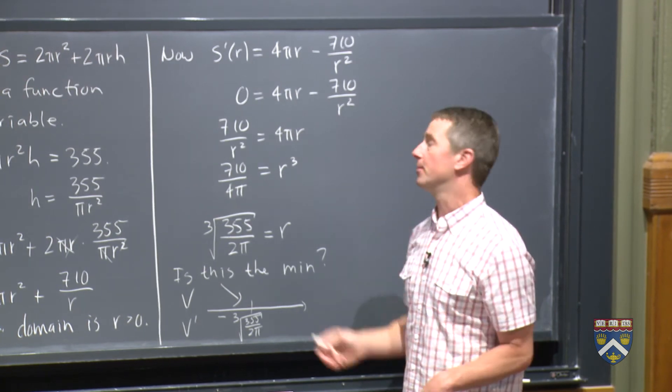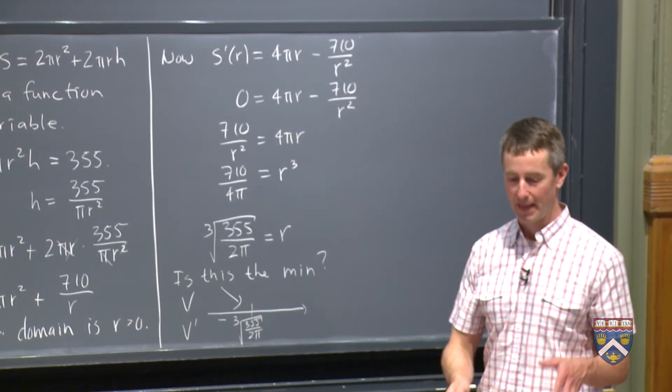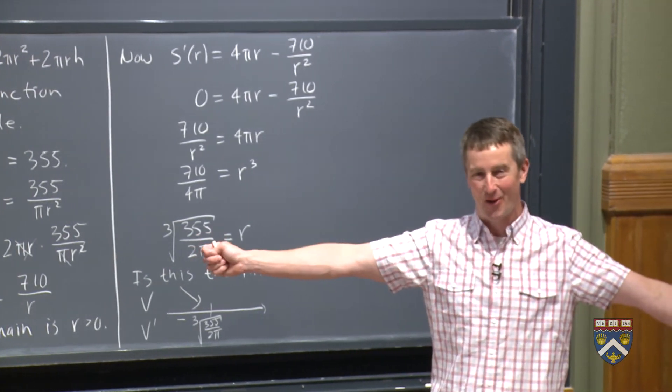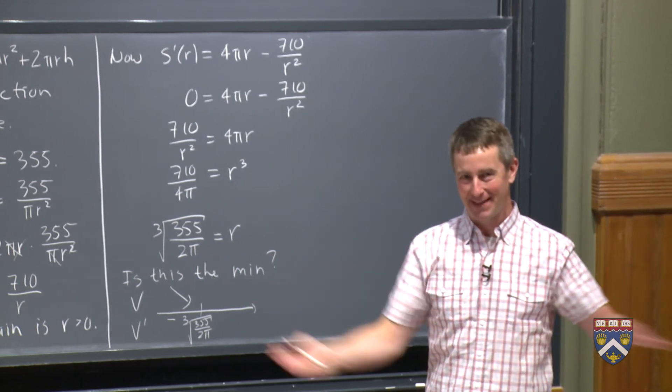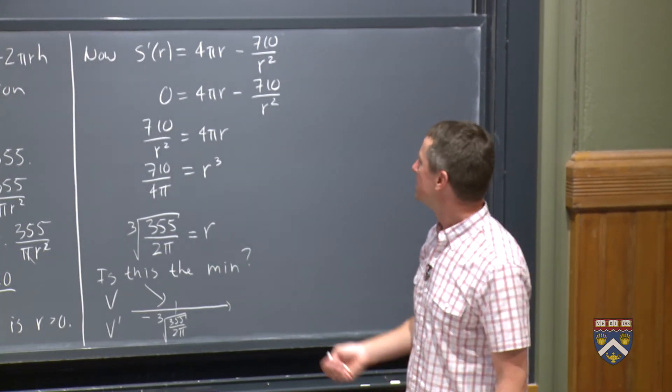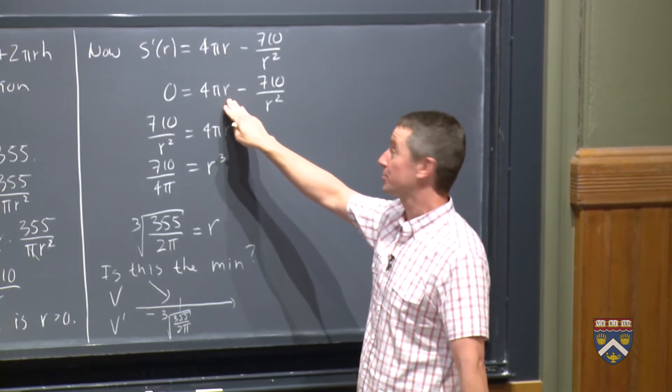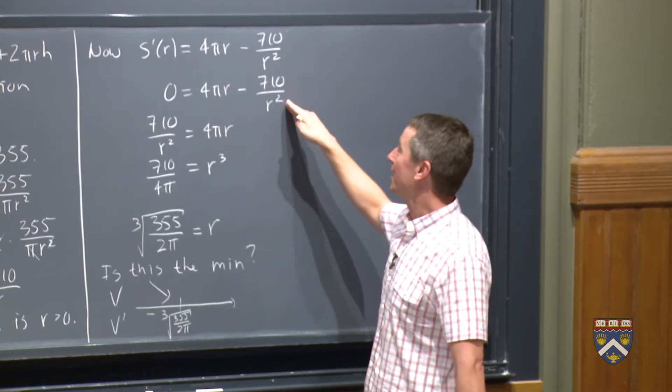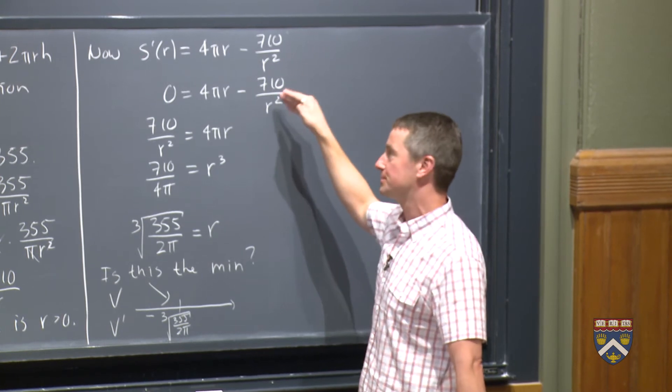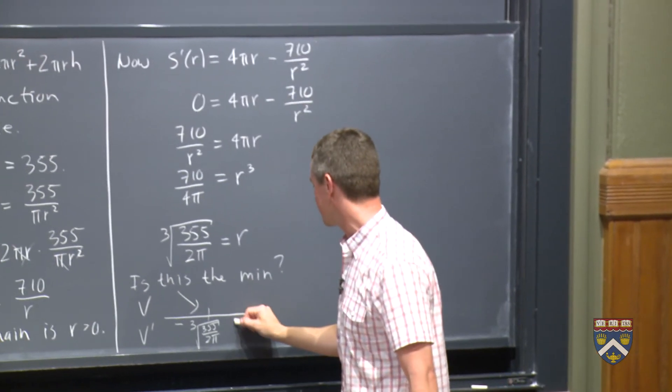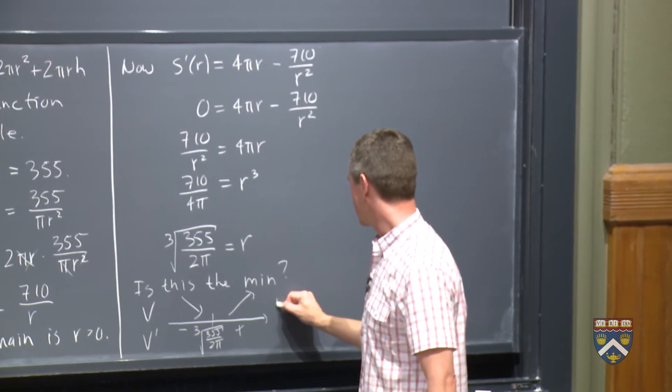And now I can just pick some huge number, a million. So imagine that r were a million. That means you have some extremely, extremely wide cylinder that's very, very, very short. So if r were a million, this is 4 pi times a million, that's 13 million or so, 710 over a million squared, this is almost zero. This is definitely positive, just like we hoped. So the answer is yes. So it is what we were hoping for, it is the min, and we're trying to find what the optimal dimensions are.